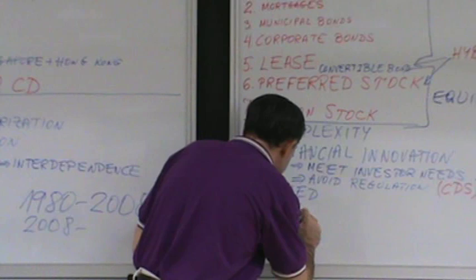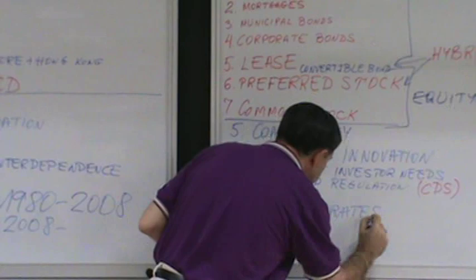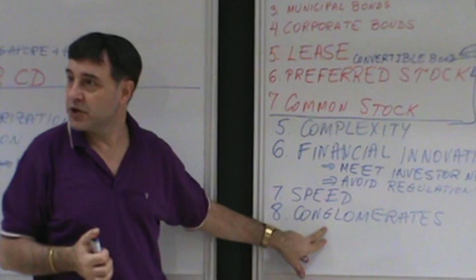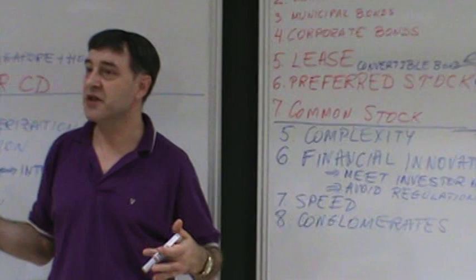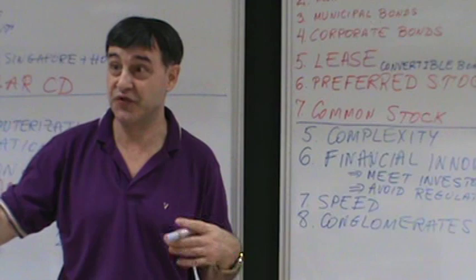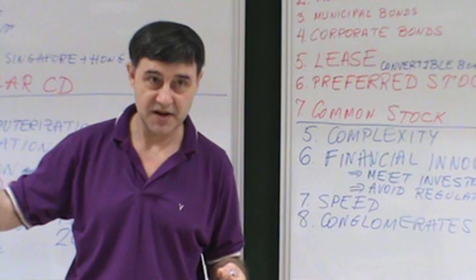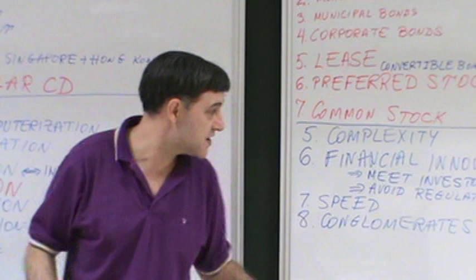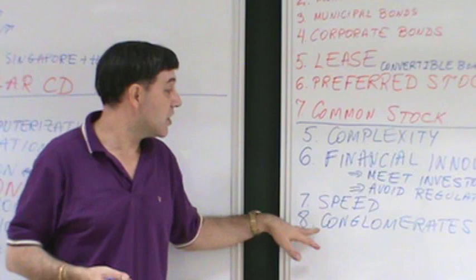Another characteristic is conglomerates. Financial conglomerates is a financial institution that offers a large number of different financial services. They offer commercial banking services, and credit cards, and brokerages, and insurance, and investment banking. Whatever the financial services, they offer most or all of them.